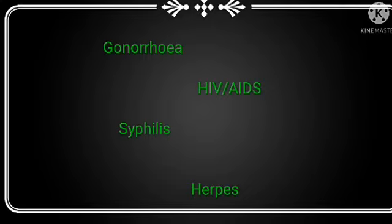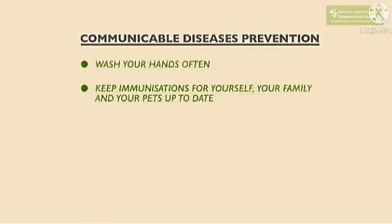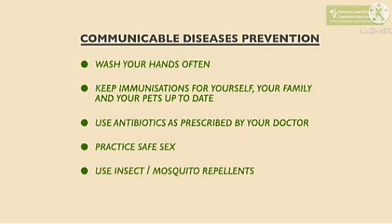Let's quickly look at some of the ways communicable diseases can be prevented. How do we prevent the transfer of these diseases? Wash your hands often. Keep immunizations for yourselves, your family, and your pets up to date. Use antibiotics as prescribed by your doctor. Practice safe sex. Use insect and mosquito repellent. Practice good hygiene.